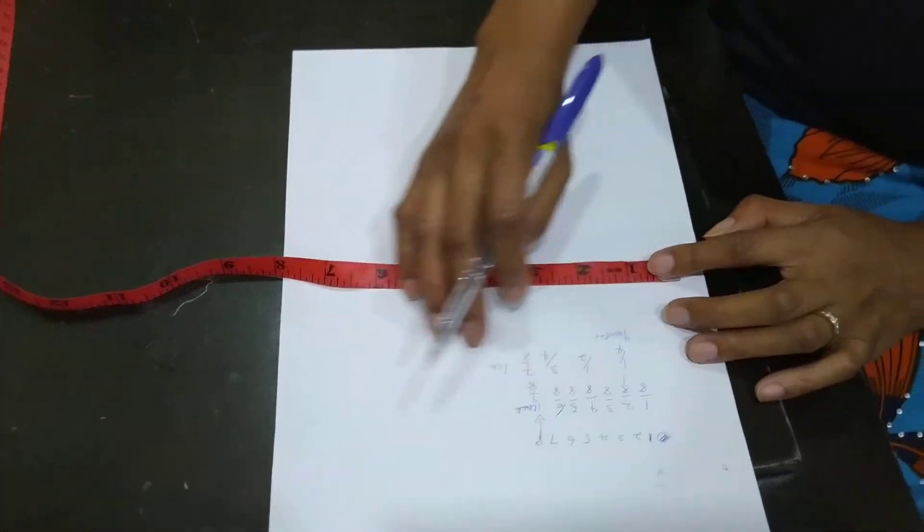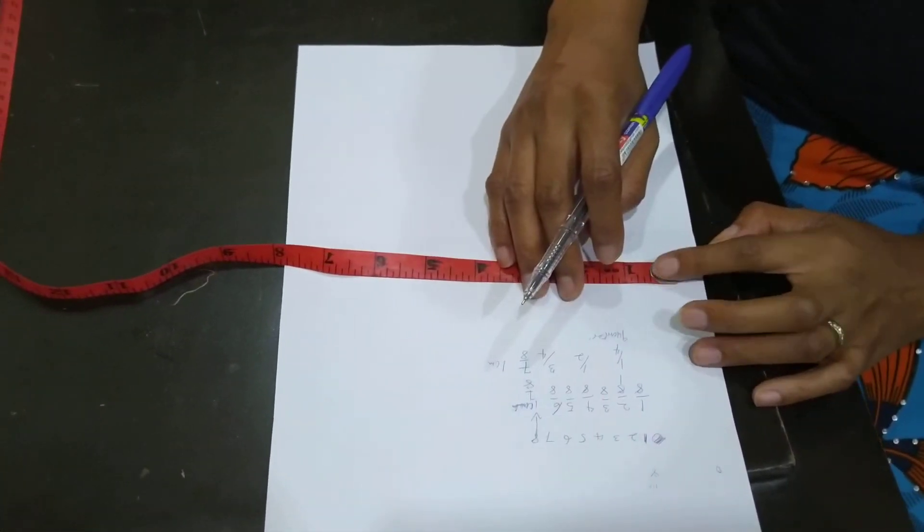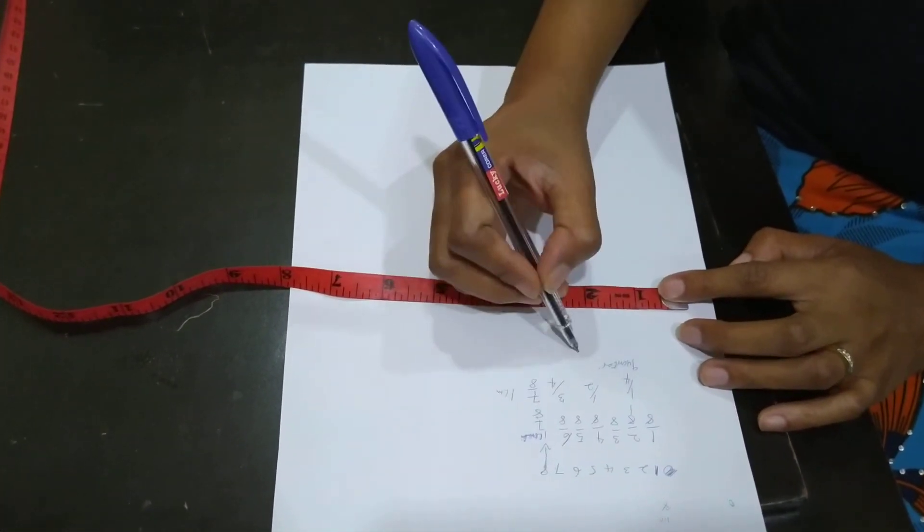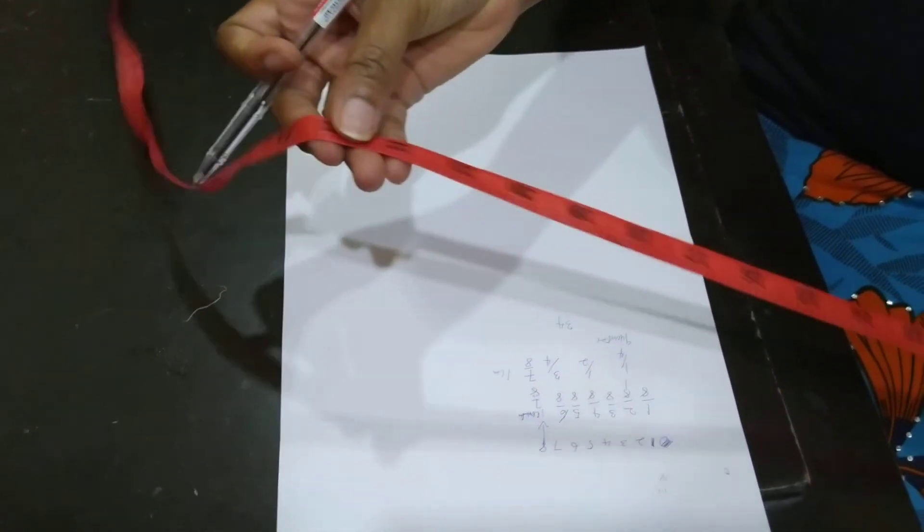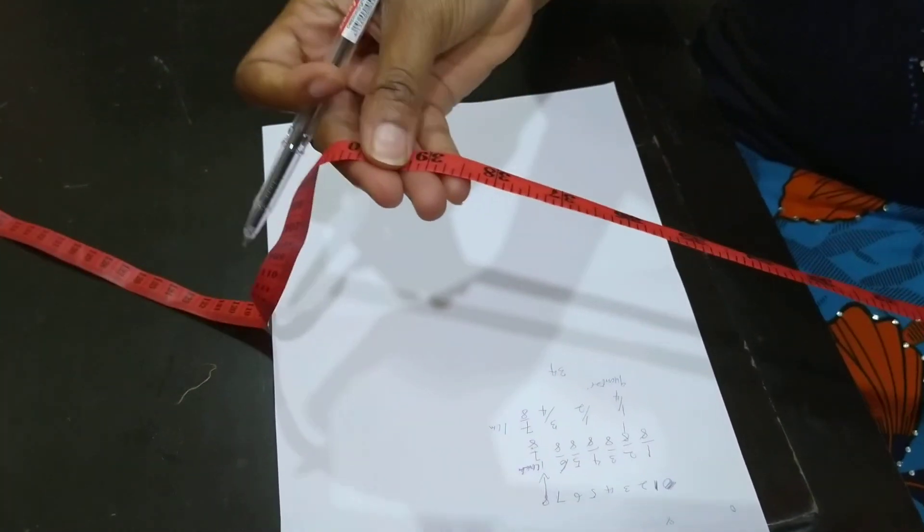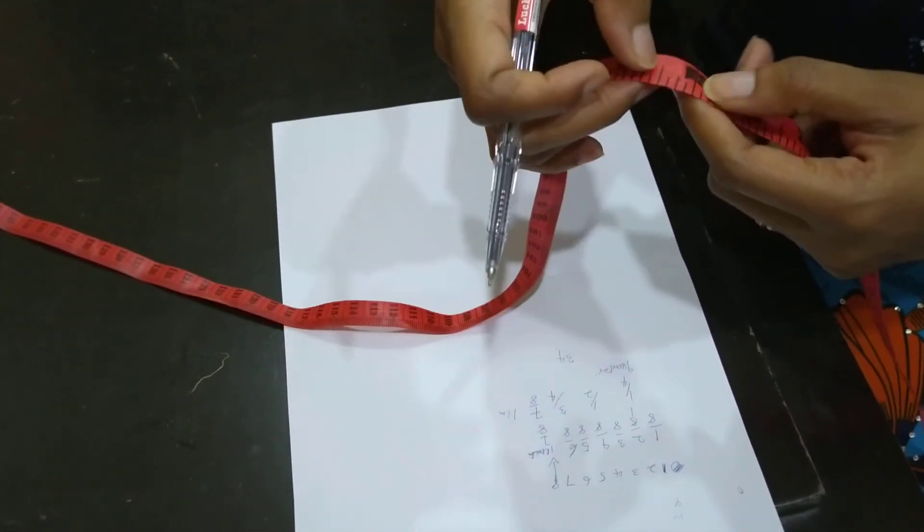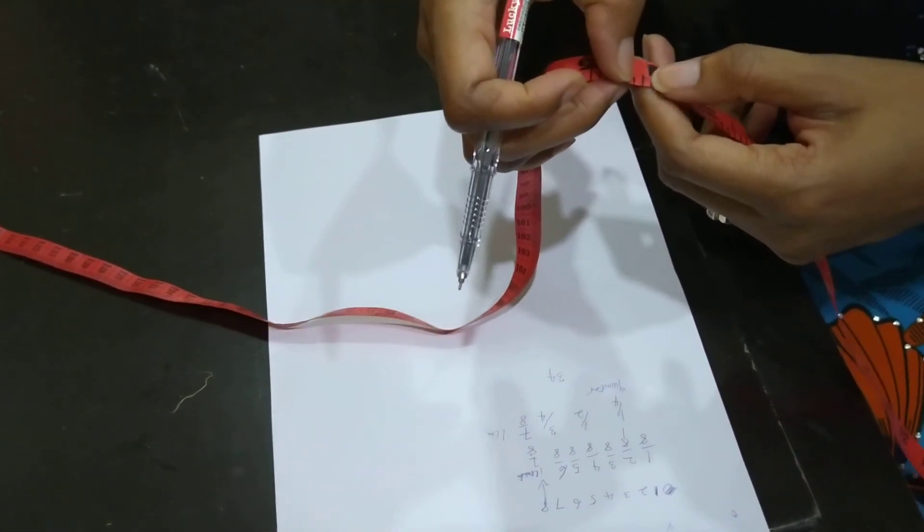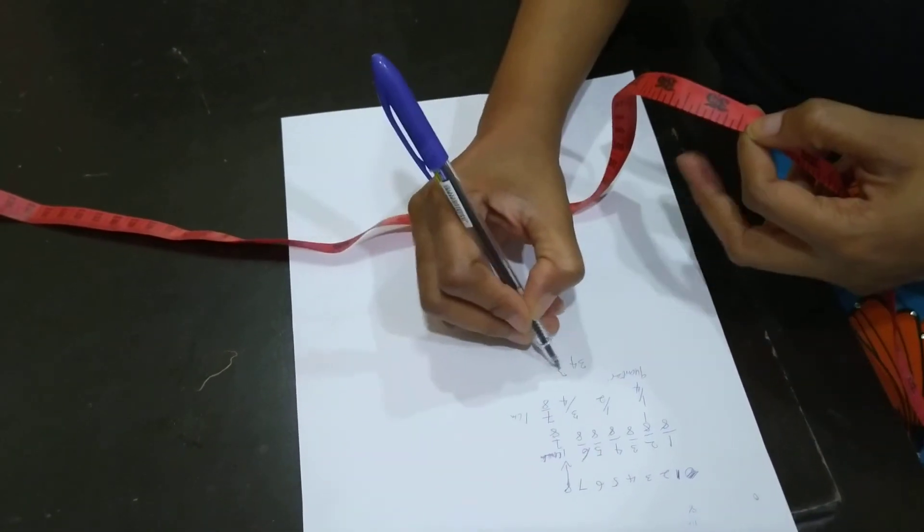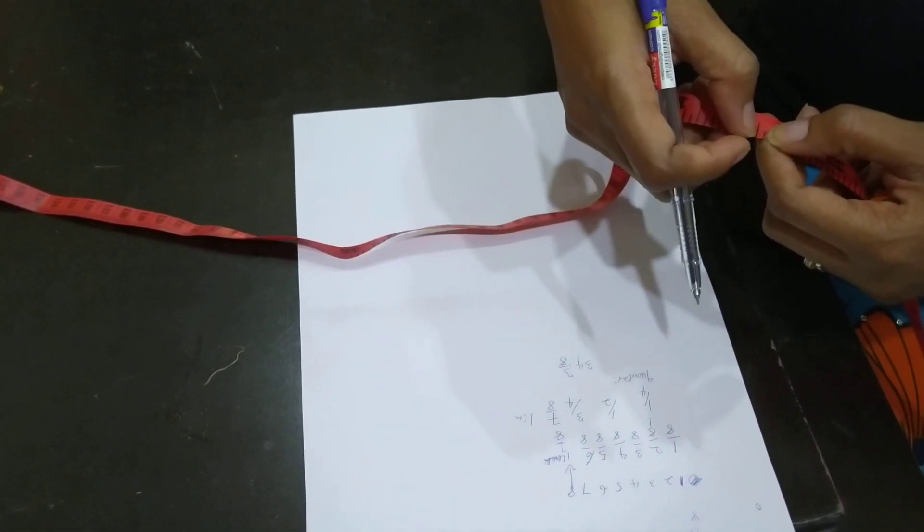So for example, if you are taking a bust circumference of someone and you have 34, after 34 and it lands between the third line, it is 34 3 over 8, not 34 and a half. It is different.